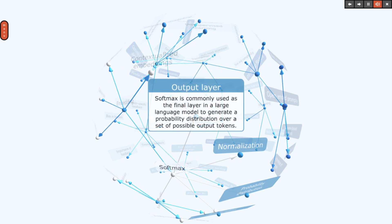Softmax is commonly used as the final layer in a large language model to generate a probability distribution over a set of possible output tokens.